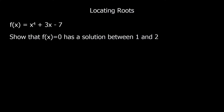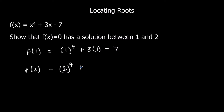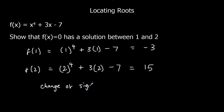Here we've got a different function. Show that f(x) = 0 has a solution between 1 and 2. So again, we're looking for a change of sign. So f(1) = 1⁴ + 3×1 - 7, and f(2) = 2⁴ + 3×2 - 7. So we've got -3 and +15. So again, we've got a change of sign, therefore we have located the root — root between 1 and 2.